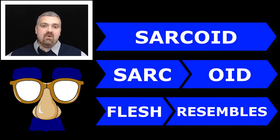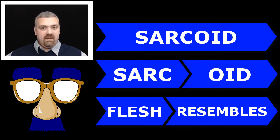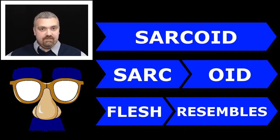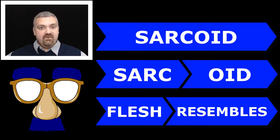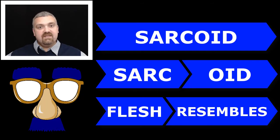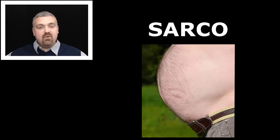Lastly we have sarcoid — oid means resembling or derived from — so sarcoid means something that resembles flesh. This makes me think of sarcoidosis, where osis means a disorder or condition. Sarcoidosis is a condition where inflammatory cells cluster together throughout the body creating lumps of tissue that resemble flesh. So sarco means flesh.